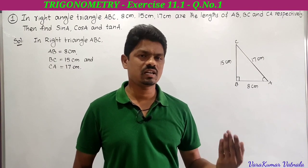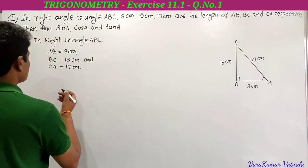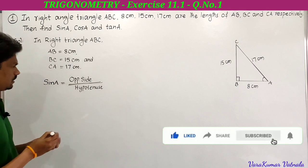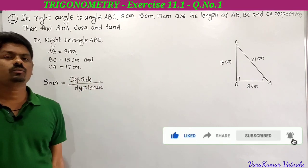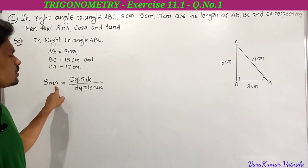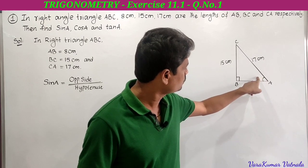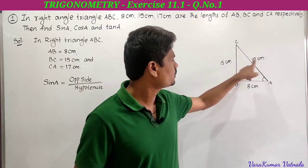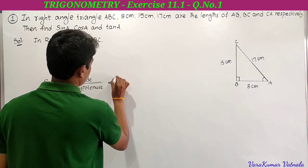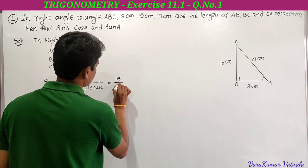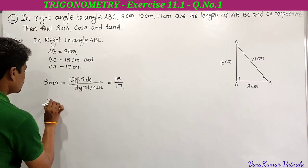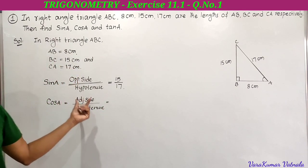If we know the lengths of all three sides we can find all six trigonometric ratios. Sine A is equal to opposite side by hypotenuse. Here, opposite side to angle A is 15 and hypotenuse is 17, so sine A equals 15 by 17.